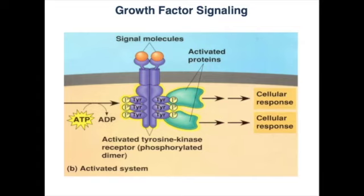Binding of growth factor to the receptor binding site activates the kinase domain on the interior end of the receptor protein. This activated kinase then goes on to add phosphate groups to other proteins inside the cell, which then activate more proteins downstream, triggering a signaling cascade that finally ends with the activation of genes that bring about cellular growth, specialization, and survival. In reality, it's not so much a linear signaling pathway as it is an interwoven, intricate signaling web with promiscuous proteins from many different pathways activating and repressing one another.